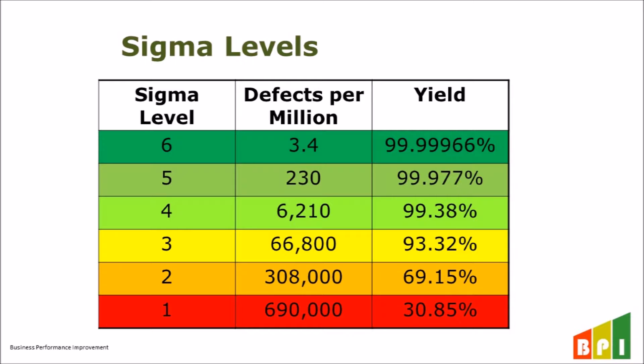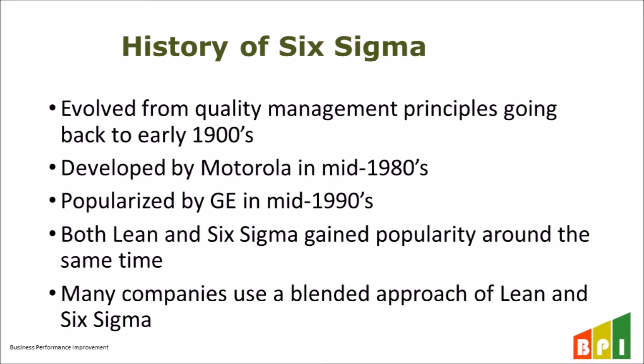Six Sigma was introduced by engineer Bill Smith while working at Motorola in 1986. It was later popularized by Jack Welch, CEO at General Electric in the early 1990s. He made it a requirement that his leadership achieve a green belt certification before they could be promoted. Both Lean and Six Sigma became popularized around the same time. Nowadays, most companies feel Lean and Six Sigma complement each other, so they use a blended Lean Six Sigma approach.